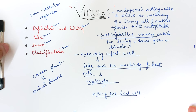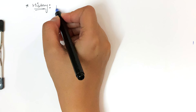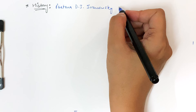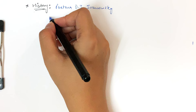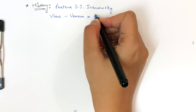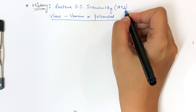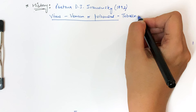Now let's discuss the history of how viruses were discovered. One very important name is D.J. Ivanovsky, who is known for the discovery of viruses. He named them 'virus,' a word meaning venom or poisonous. In 1890 he discovered the tobacco mosaic virus, that is TMV.